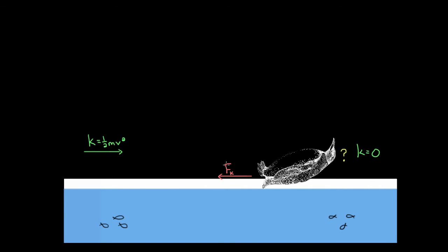But we're talking about conservation of energy here. So how can we put this idea in terms of energy? Well, the way we do it is we just say that this force of friction is doing negative work on the penguin. And we know the work is negative because the force of friction is directed in the opposite direction to the penguin's motion. The other way we could see this is that we could just use the formula for work done by any force, and that formula is Fd cosine theta.